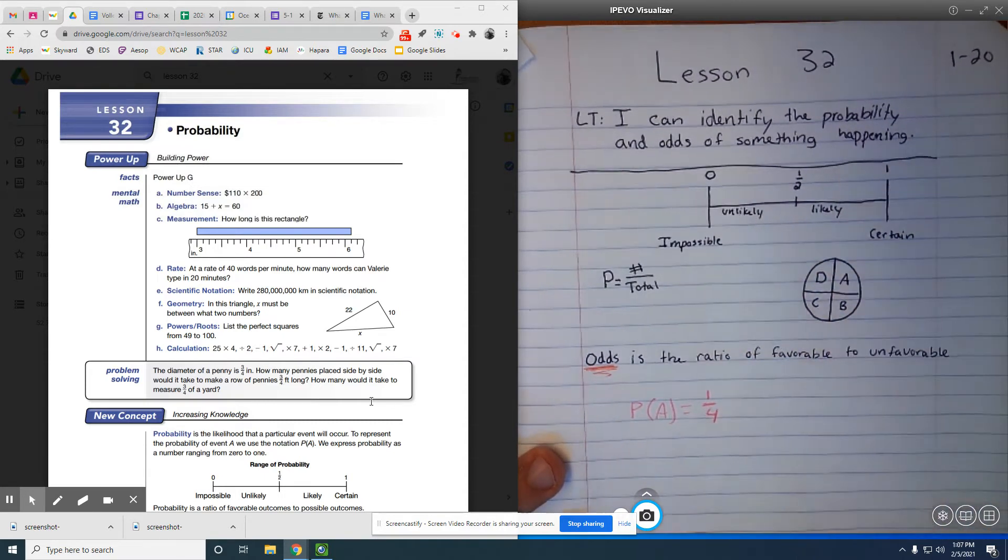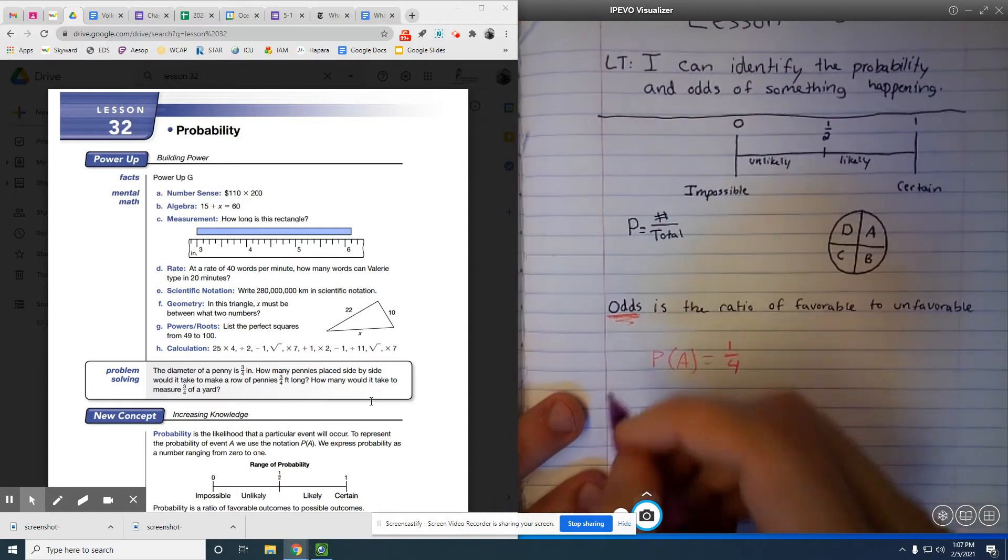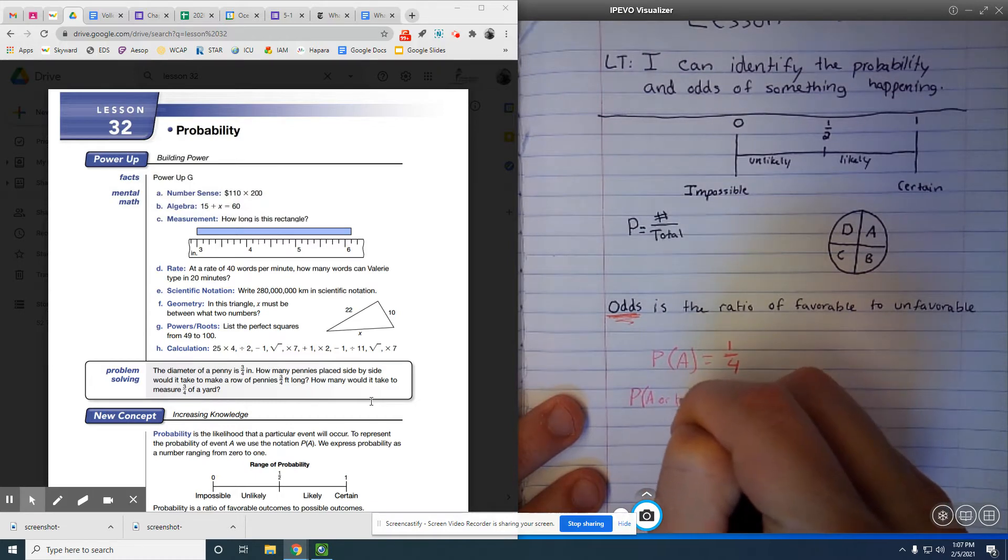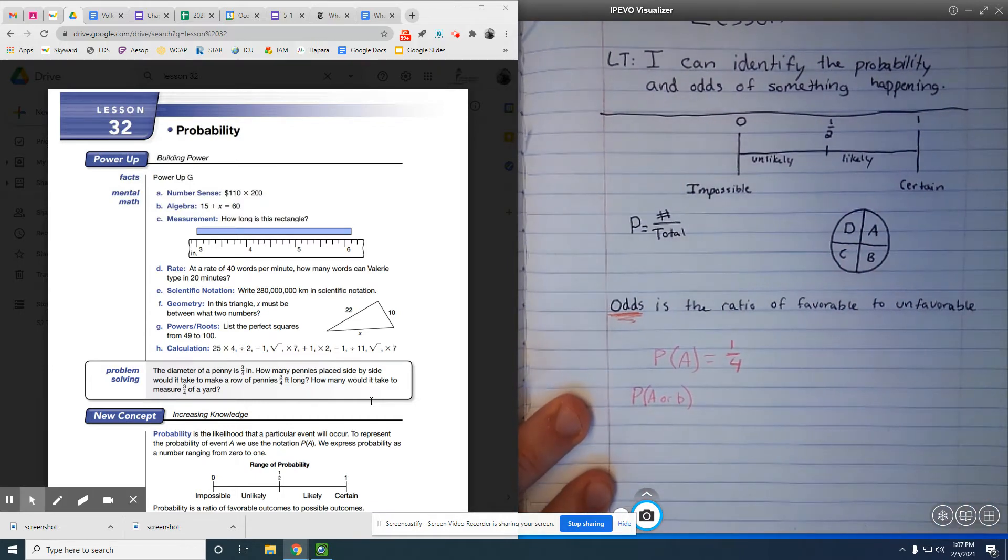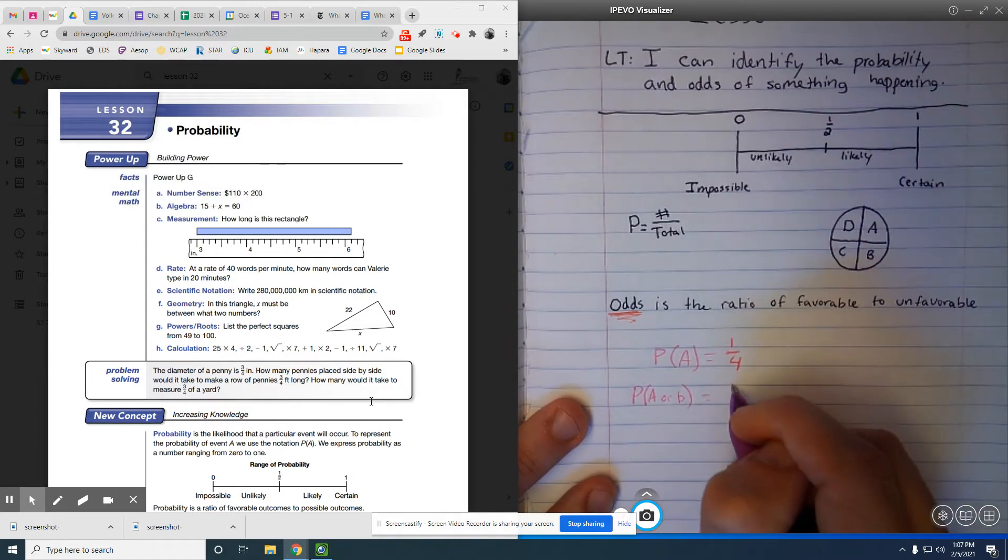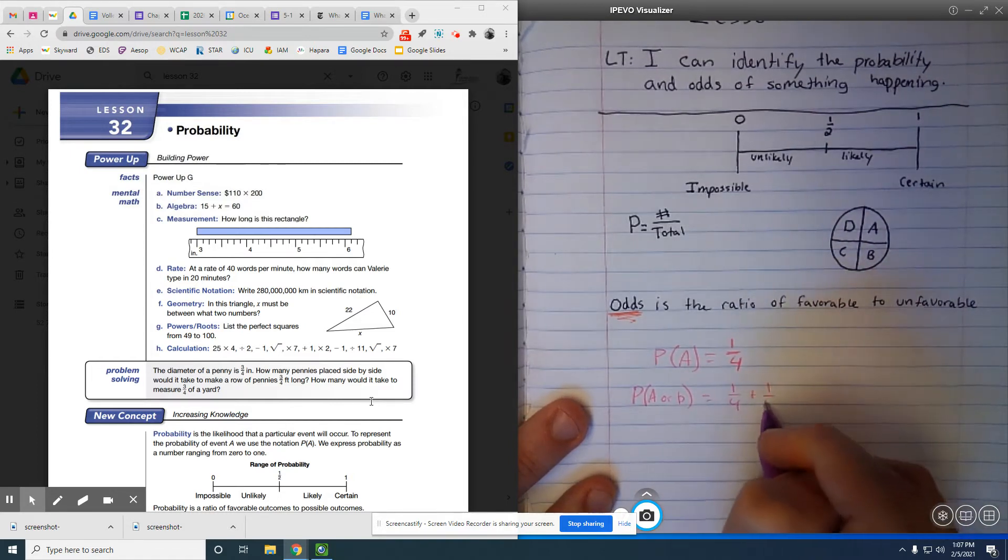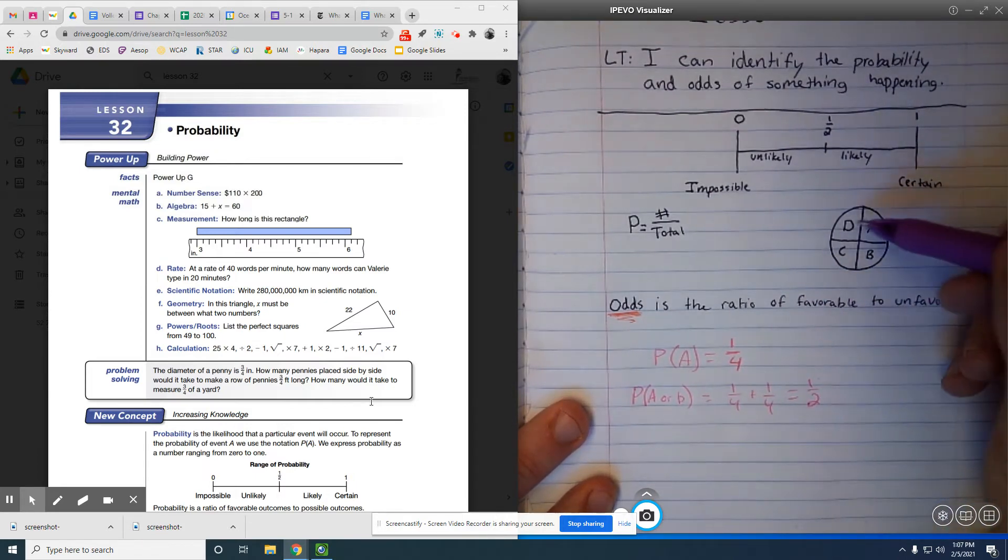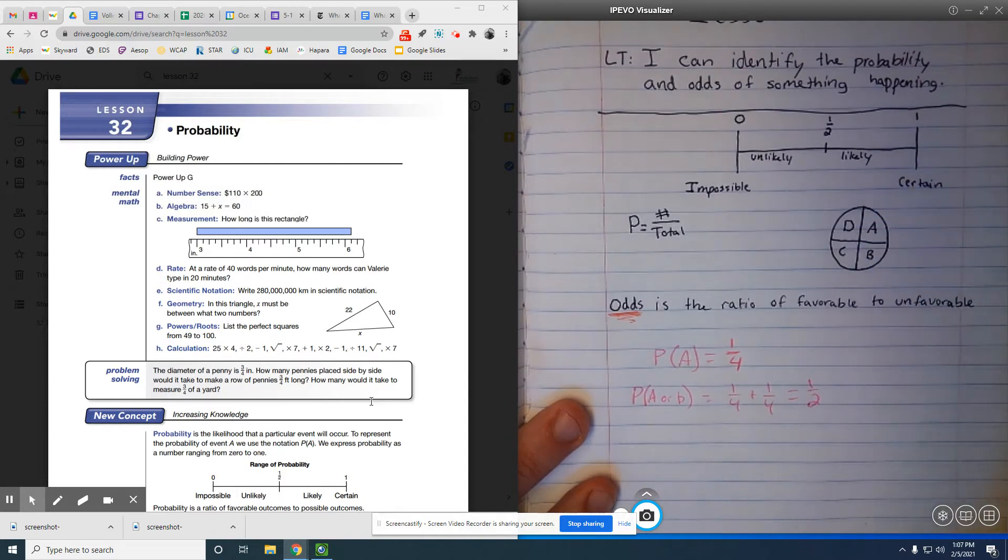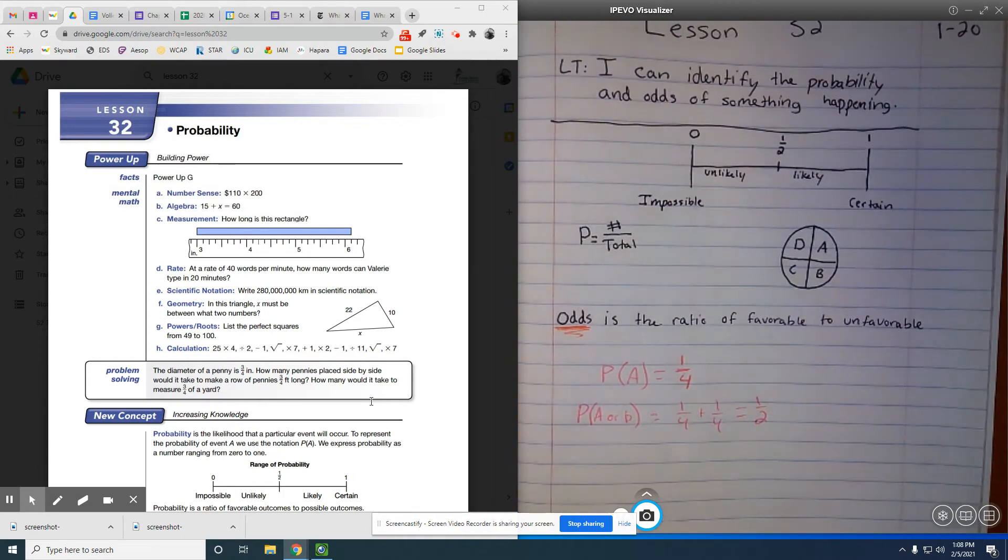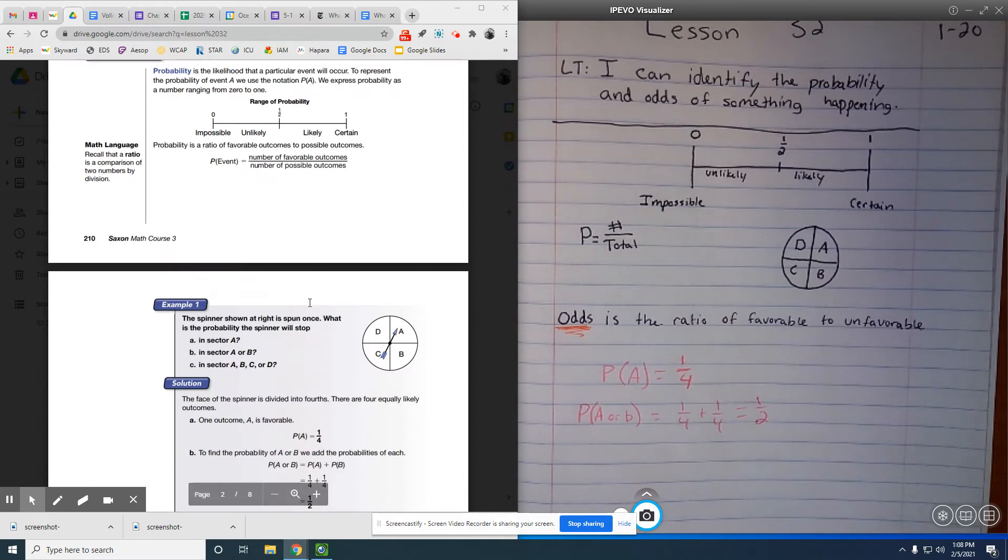So the probability of getting A would be 1 fourth. What about the probability of A or B? Well, the probability of A is 1 fourth, and B is also 1 over 4. So that would be 1 fourth plus 1 fourth, which is equal to 1 half. Again, 1 over the total, 1 over 2. We can kind of see where that 1 half is coming from. So again, probability, we're really focused on what we want divided by the total.